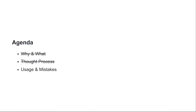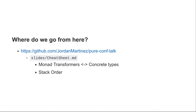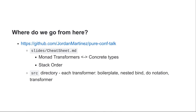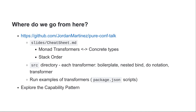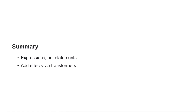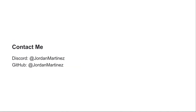We've covered how to use monad transformers and shown the mistake of stack order affecting things. I didn't cover everything — the point of this talk is just to enable you to use these three transformers by the end. I encourage you to check out the repo and look through more content there, including the source directory to see how each transformer looks in its different versions, and run the examples using the scripts provided. When you have a better understanding, it would be helpful to read about the capability design pattern if you're not familiar with it already. In summary: use expressions, not statements. Wrap them in monad transformers to add effects. Stack order matters, and you can use these on all monads. If you have any questions, contact me through Discord or open an issue on the repo. Thank you.